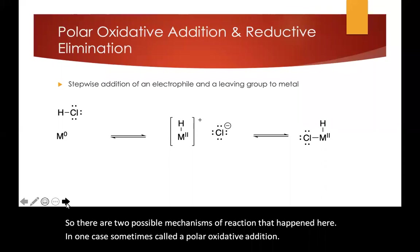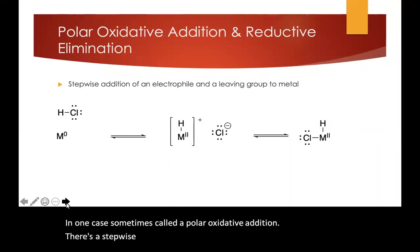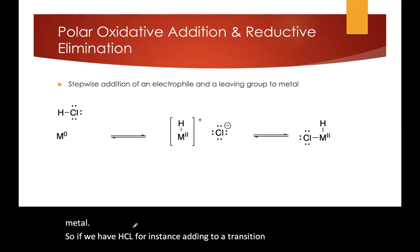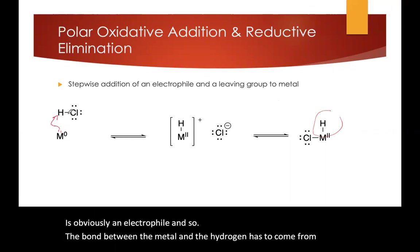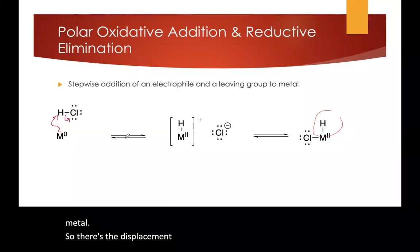there's a stepwise addition of an electrophile and a leaving group to the metal. So if we have HCl, for instance, adding to a transition metal, the proton is obviously an electrophile. And so the bond between the metal and the hydrogen has to come from the metal. So there's a displacement of the chloride ligand to form this metal hydride.